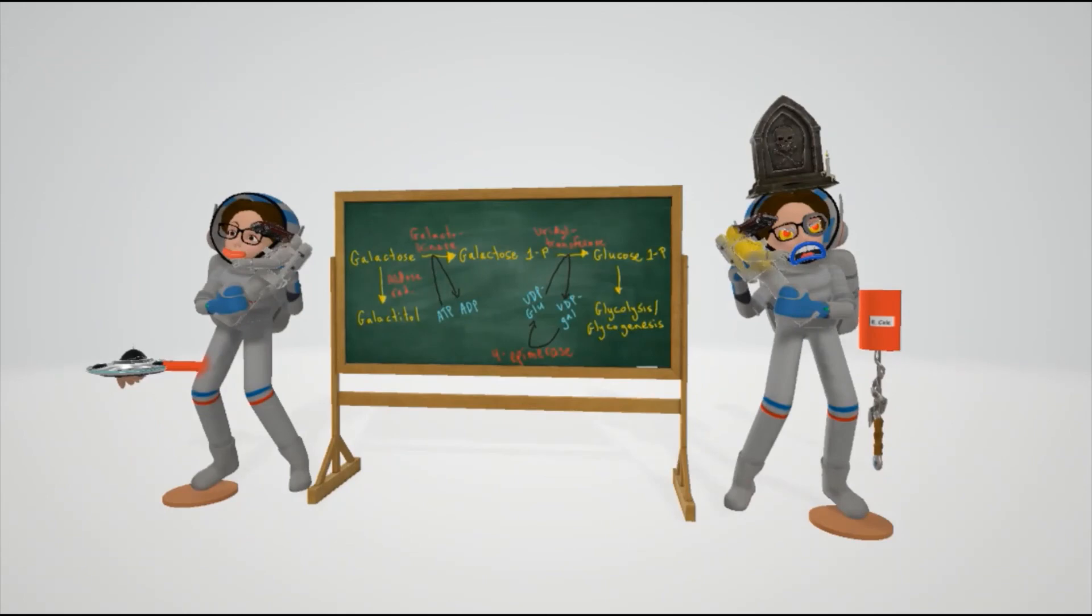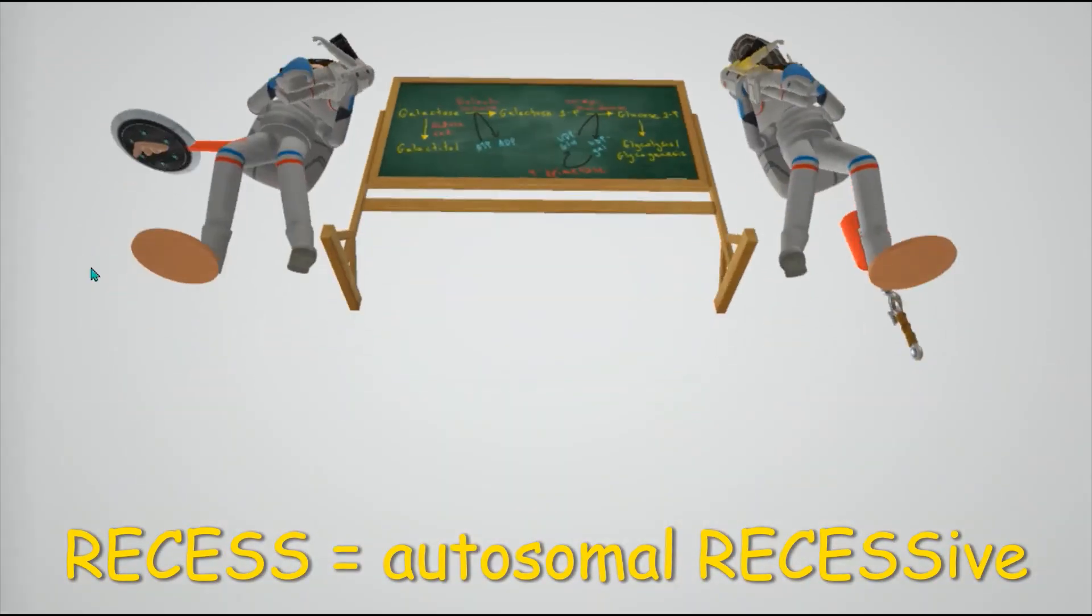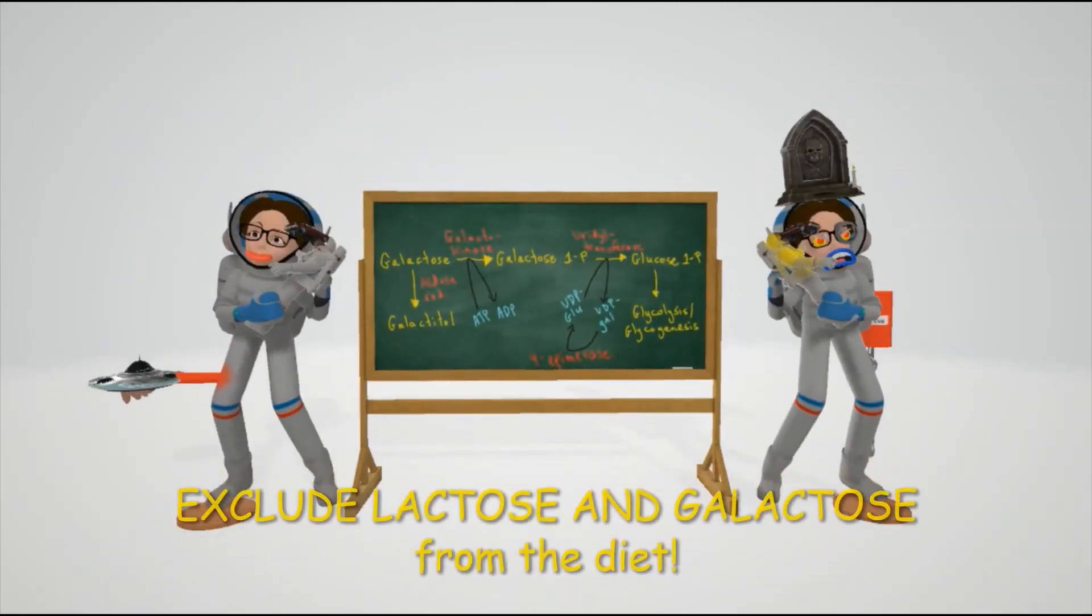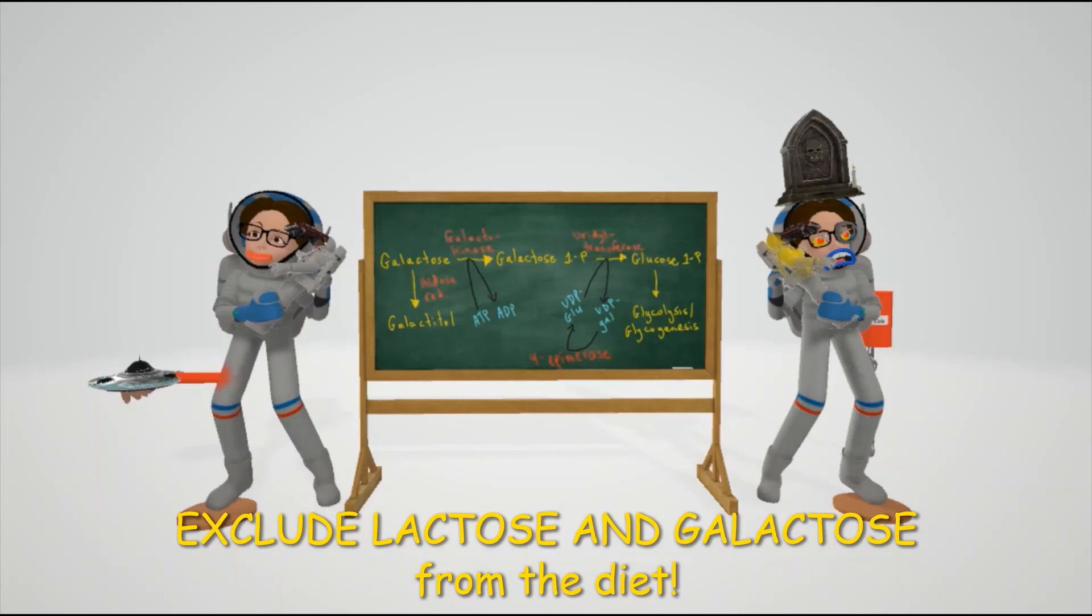Both galactokinase deficiency and classic galactosemia are autosomal recessive - that's why both teachers are standing on Reese's chocolate in outer space. Treatment of classic galactosemia includes excluding galactose and lactose from the diet.